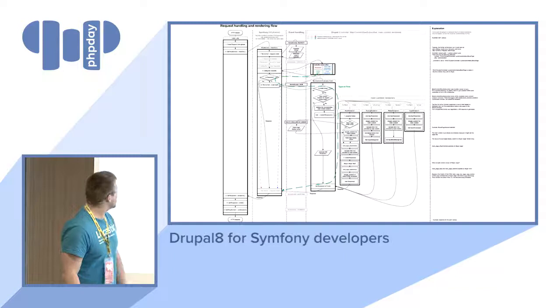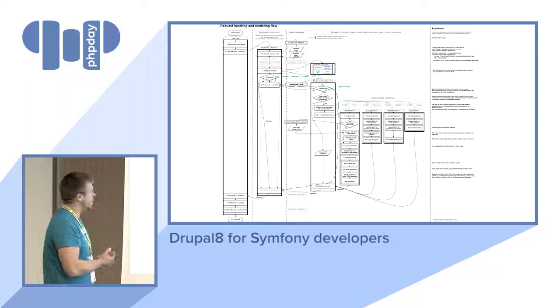The service container is initialized immediately after the kernel is created. A Drupal static class is added to the container to maintain legacy compatibility. Then Drupal attempts to serve the page from cache — if cached it's served immediately; if not, it loads variables, includes necessary files, registers stream wrappers, creates the HTTP request, lets Drupal handle it, returns and sends the response, terminates the request, and you can hook into any of these events.